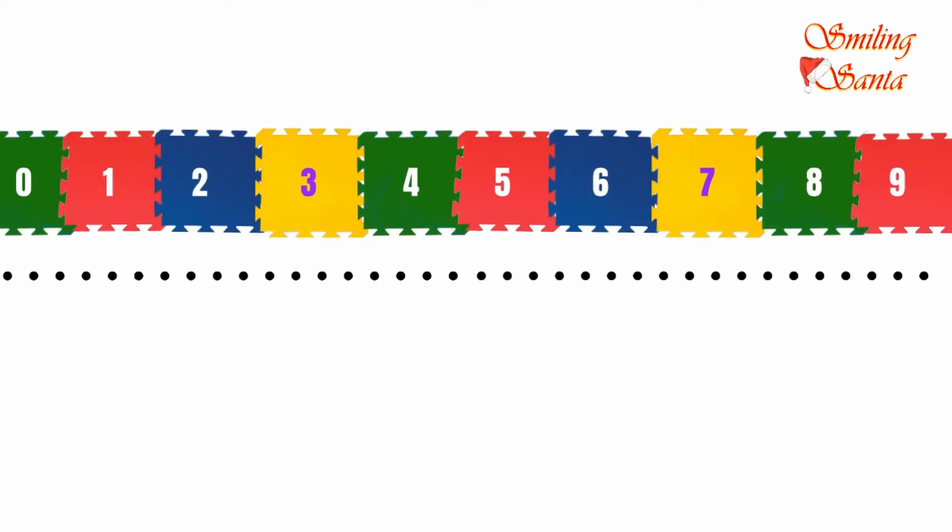The playmats are placed one after the other in a straight line. Also, they are numbered one after the other. Means 1 is after 0, 2 is after 1, 3 is after 2 and so on till mat number 9. Just like the way the numbers come one after the other. No number is skipped here.